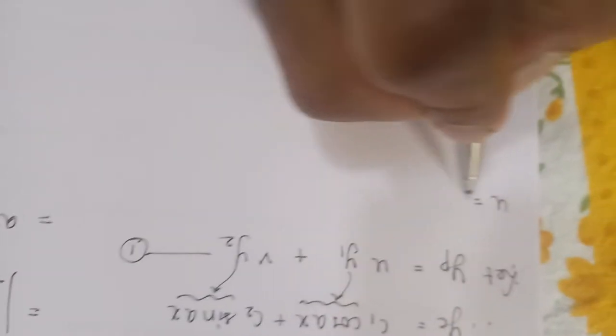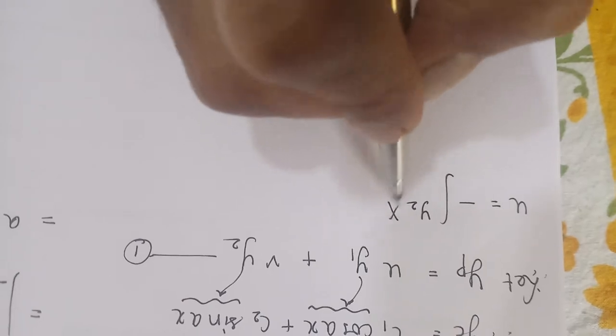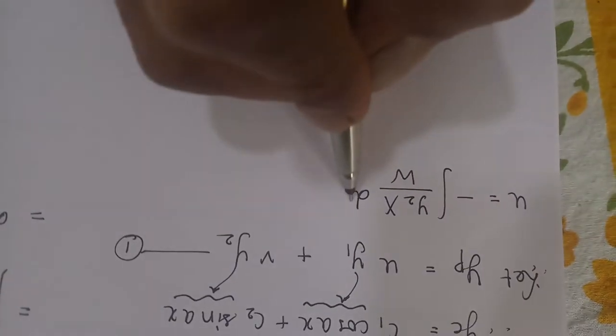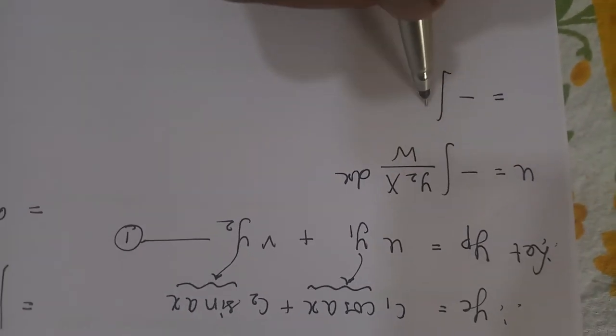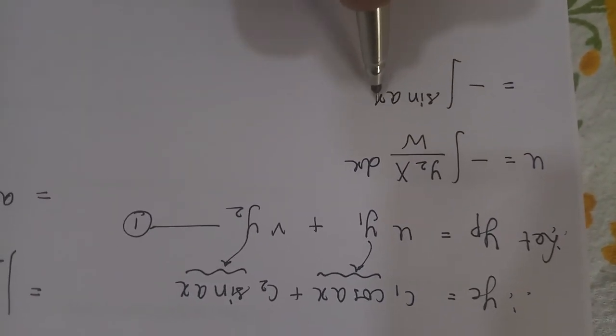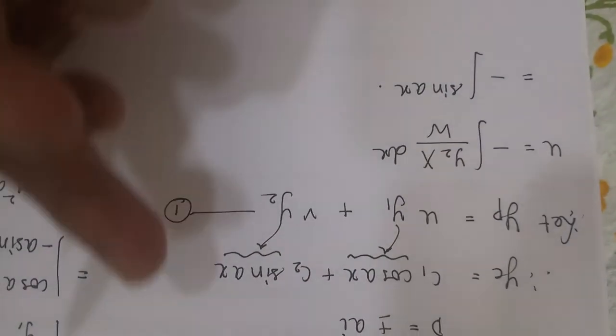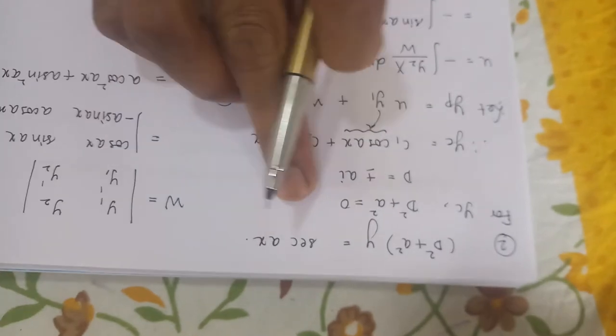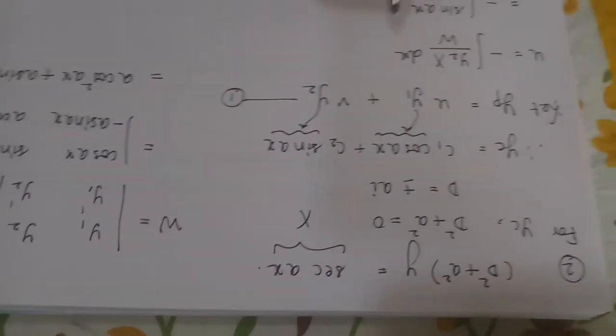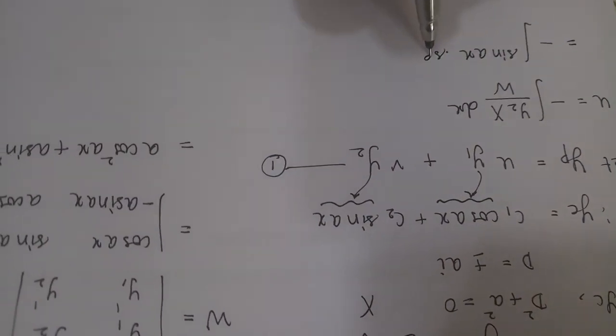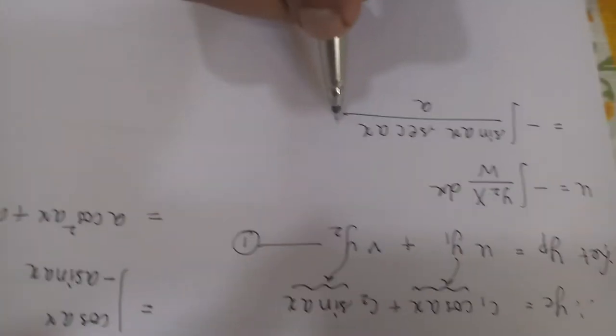u can be found out by the formula minus of integration y2 X upon W dx. So this will be minus of, now what is the y2 that we have taken? y2 we have taken as sin ax. Capital X if you look at the question, capital X is nothing but sec ax. So this is basically your capital X.